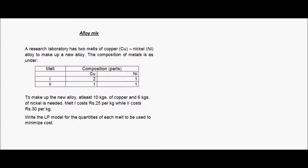Welcome to the linear programming problem formulation example for alloy mix. An alloy is a metallic composition of two or more elements. In this example we are looking at an alloy composed of copper and nickel. A research laboratory has two melts of copper-nickel alloy to make up a new alloy. The composition of metals is as follows.